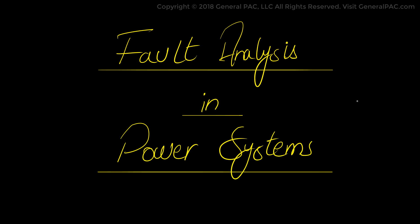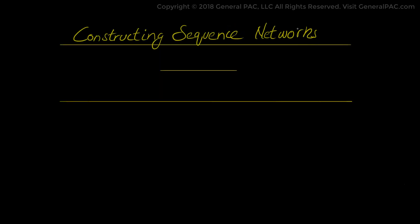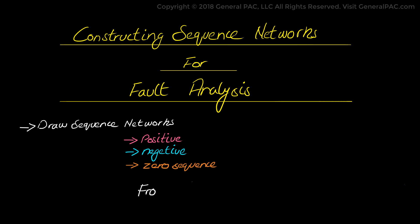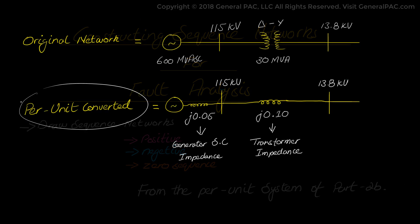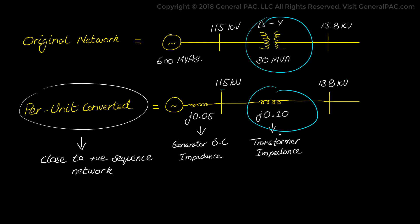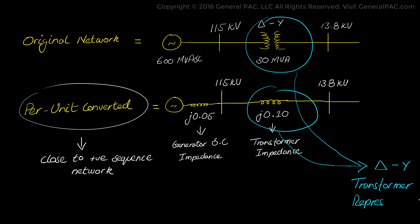Fault Analysis in Power Systems Part 2C: Constructing Sequence Networks for Fault Analysis. This is the fourth video in this series, and in this video we will learn how to draw the sequence networks for each of the positive, negative, and zero sequence networks from the system that was converted in Part 2B. The network diagram drawn previously is a loose representation of a positive sequence network which already has the delta-Y transformer sequence model integrated in it. We haven't represented the zero sequence or negative sequence network diagrams yet, which is going to be the basis of this video.